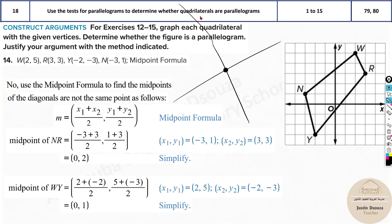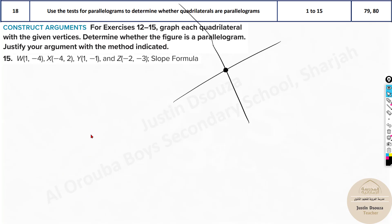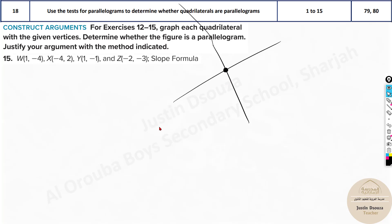If it's a parallelogram, the midpoints of the diagonals must be the same — meaning the diagonals meet at the same midpoint. Here the midpoints are (0, 2) and (0, 1) — they are not the same. So no, it is not a parallelogram because the diagonals do not intersect at the same midpoint.